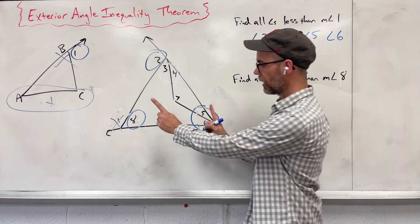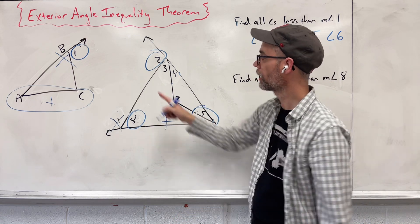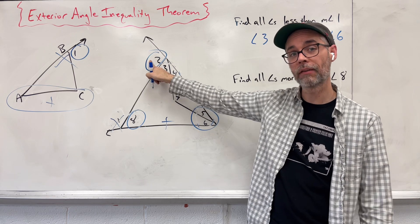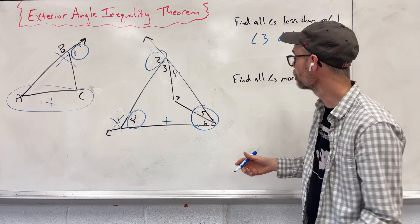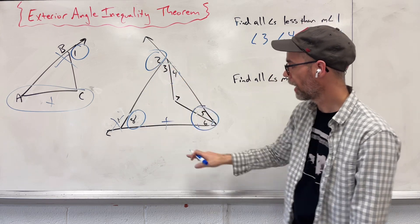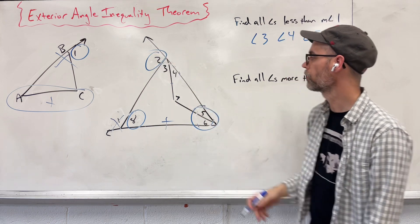So if we take these two angles and add them together, they're going to give us something that's the same exact value as angle 2 up here, this exterior angle. So individually, 8 is smaller than that. And 5 and 6 are smaller than 2.